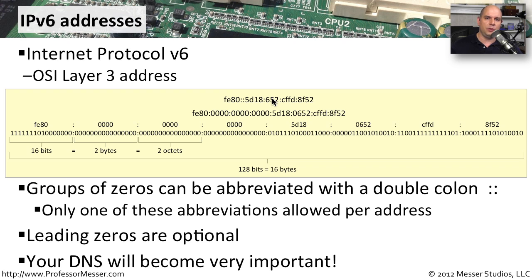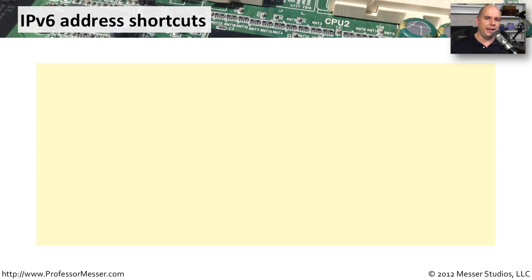Now because these addresses are so big and in hexadecimal, they're not very easy to type in if you needed to go somewhere. Your domain name system is going to be very important. It's much easier to type google.com than to type in the entire IPv6 address to communicate to google.com. Let's look again at that shortcut process for taking a single IPv6 address and shrinking it down into something more abbreviated.